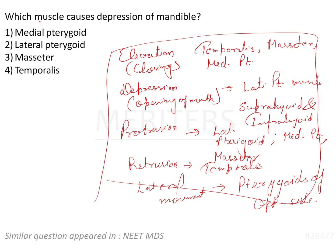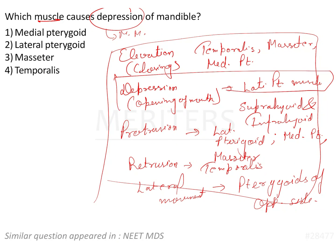Now coming back to the question: which muscle causes depression of the mandible? Only one muscle of mastication performs depression, and that is none other than the lateral pterygoid muscle. So option two is the correct answer.